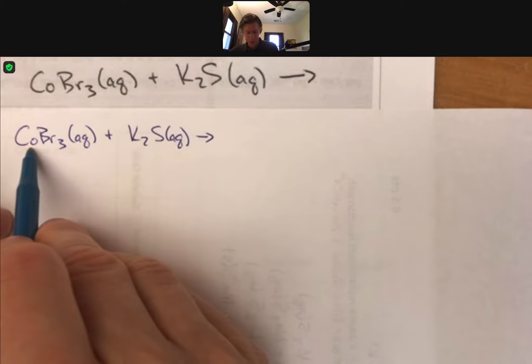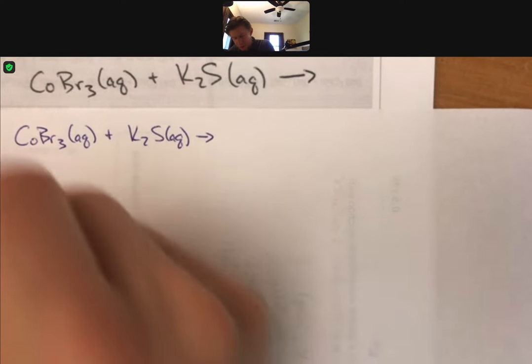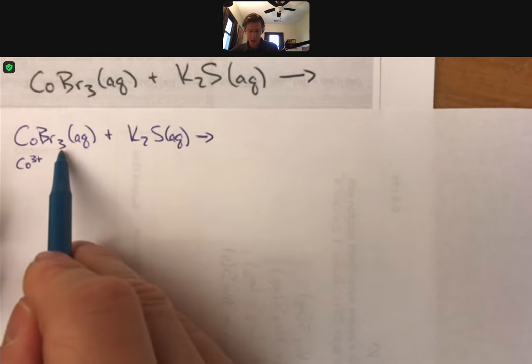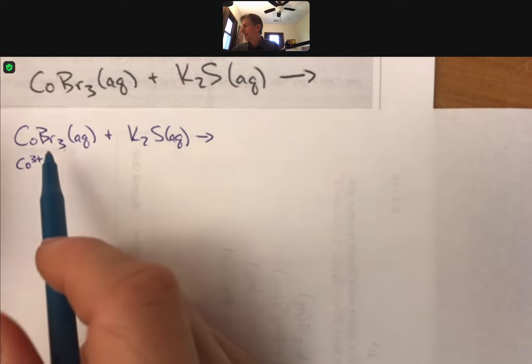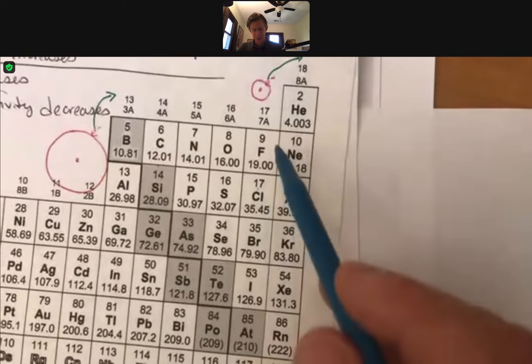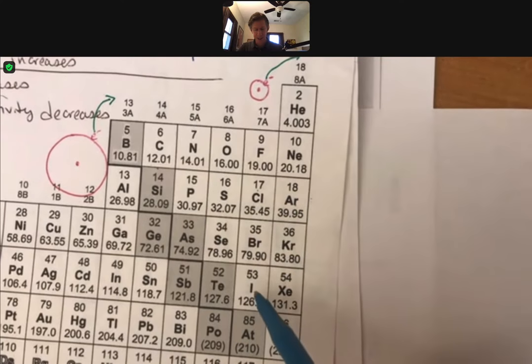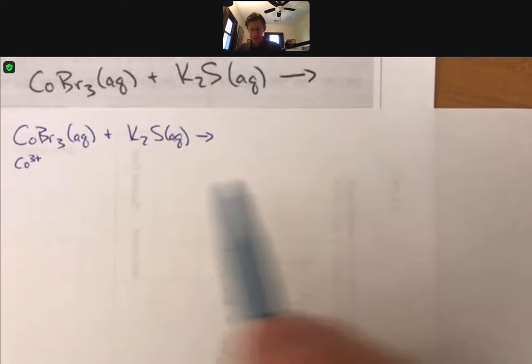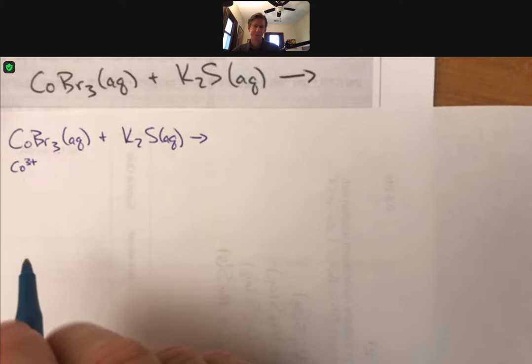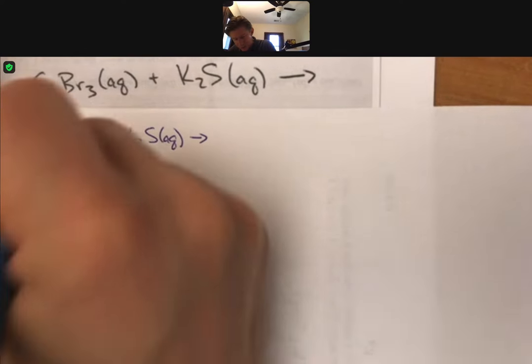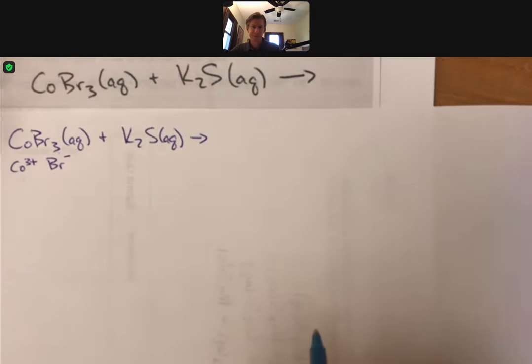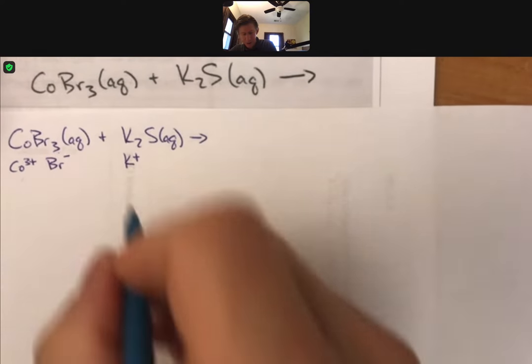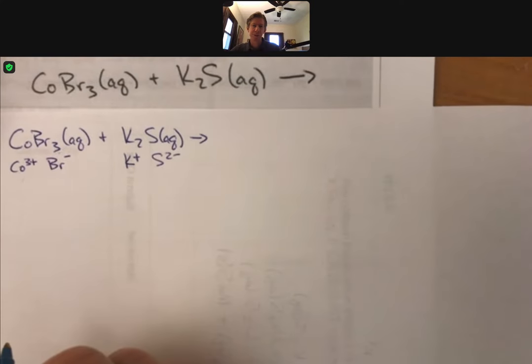But now our products are going to be, so take the cobalt, which is cobalt three plus. And we know that because it takes three bromides. And bromide is one of the halogens. And halogens have minus one charges. So three minus ones means that the cobalt has to be plus three. And the bromide is minus one. The potassium is in group one, so that's just K plus. Sulfide is two minus.